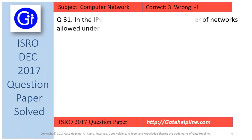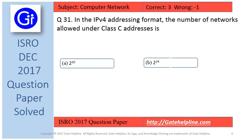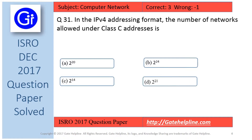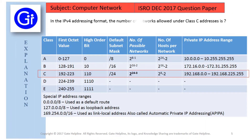Question number 31 is: in the IPv4 addressing format, the number of networks allowed under class C addresses. The options are A, B, C, and D. So now we will see the explanation to this question.